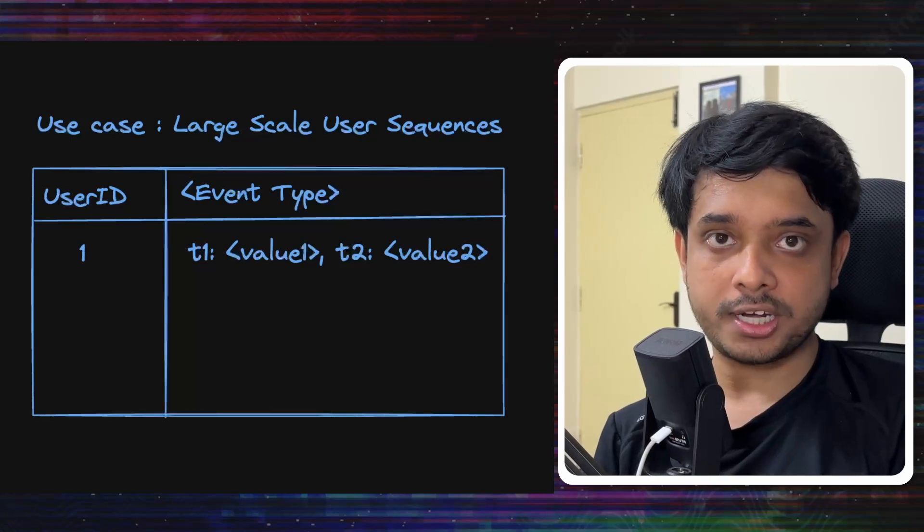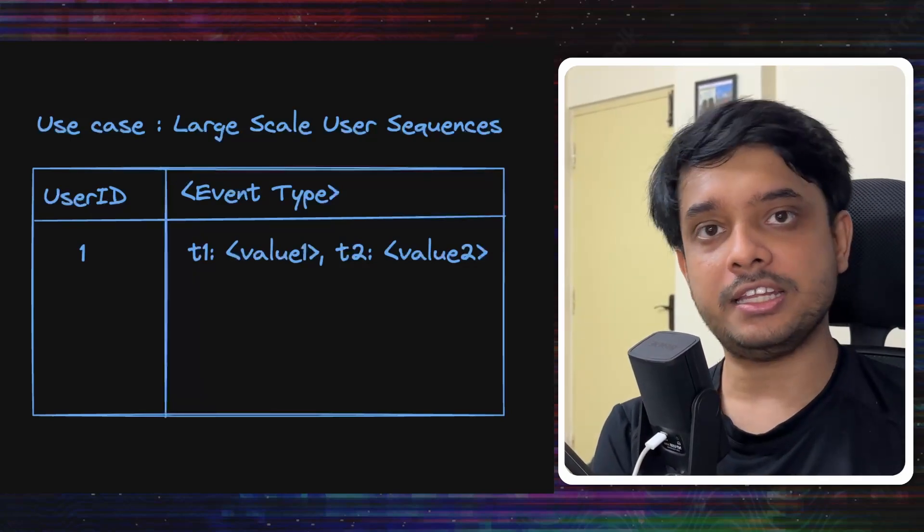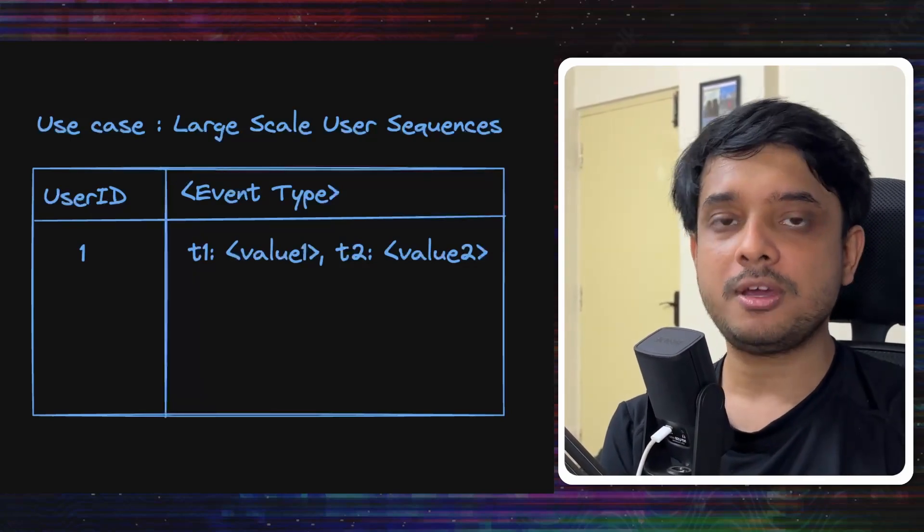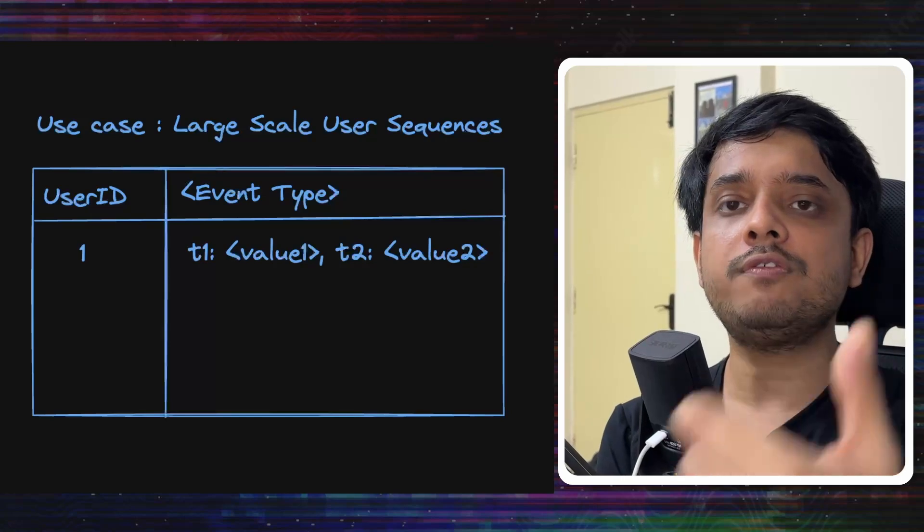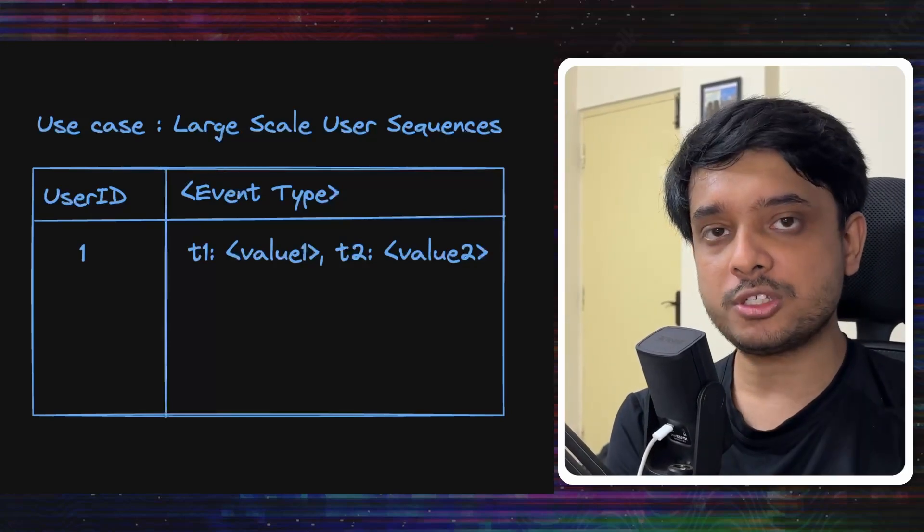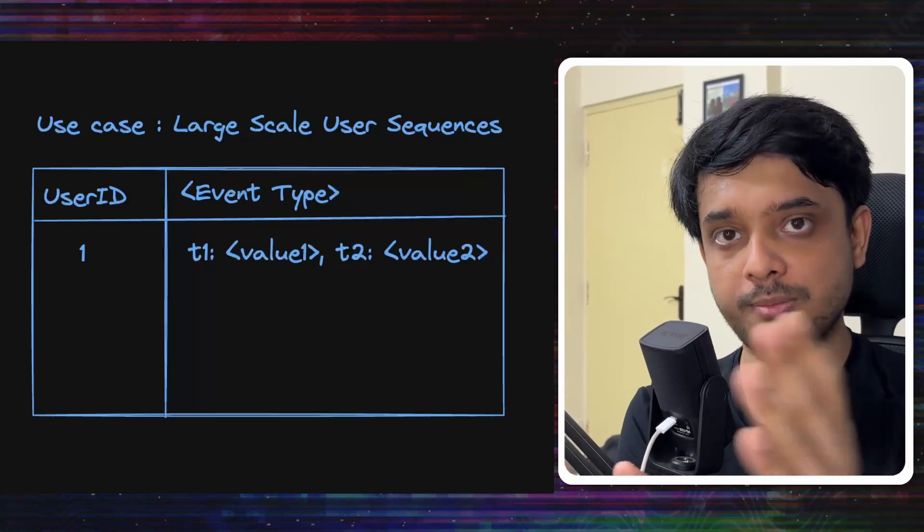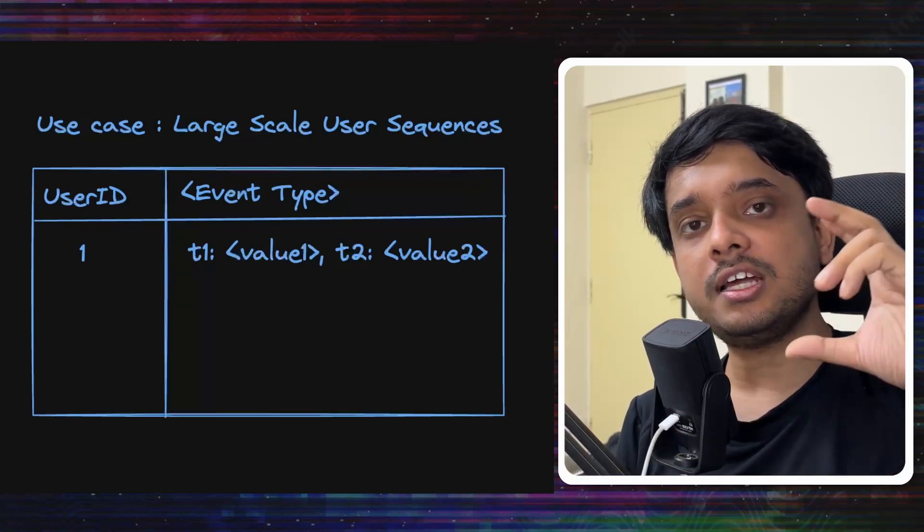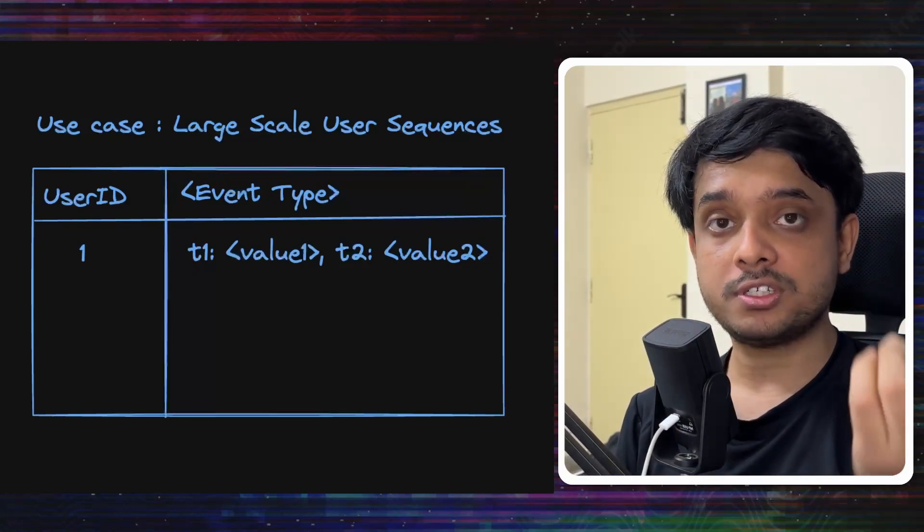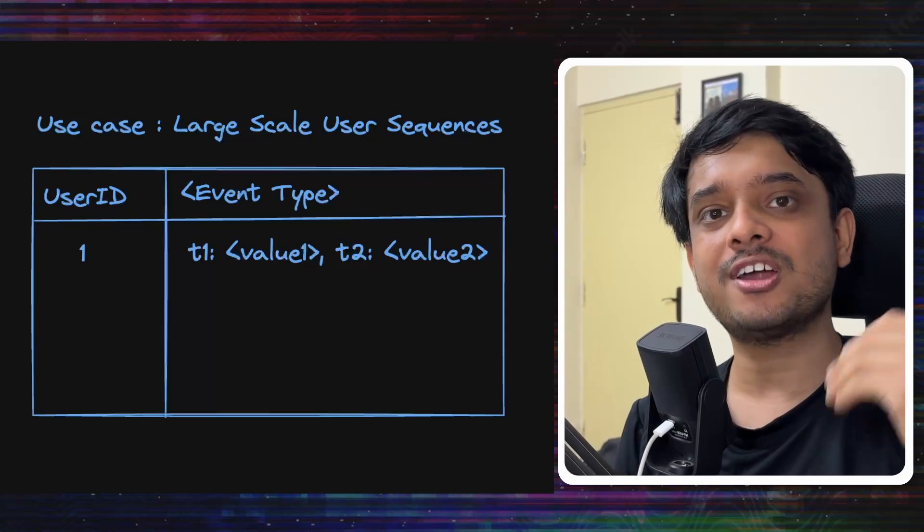So how will they query this data? They will give the user ID which is the row key and then they will give the action type which is the column name and they would also give the number of values that they want. Then the database will return the values that are there for that particular user for that particular action and only the number of values that are requested in the descending order of timestamp.